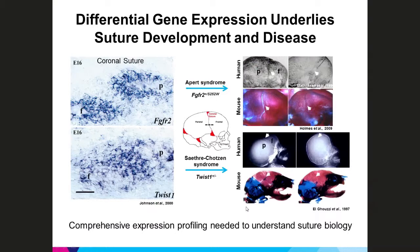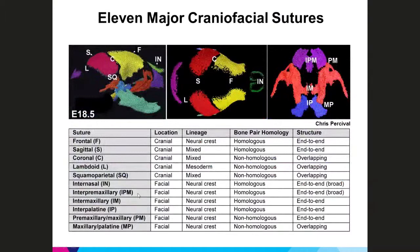Our aim for this project is to create transcriptome atlases for 11 major craniofacial sutures, shown in these micro-CT images of the mouse skull at E18.5. These images show the actual ossified or mineralized bone, so the osteogenic fronts and suture mesenchyme would be at the edges or between the bones. The sutures themselves vary in a number of ways that may result from or impact gene expression differences between them.